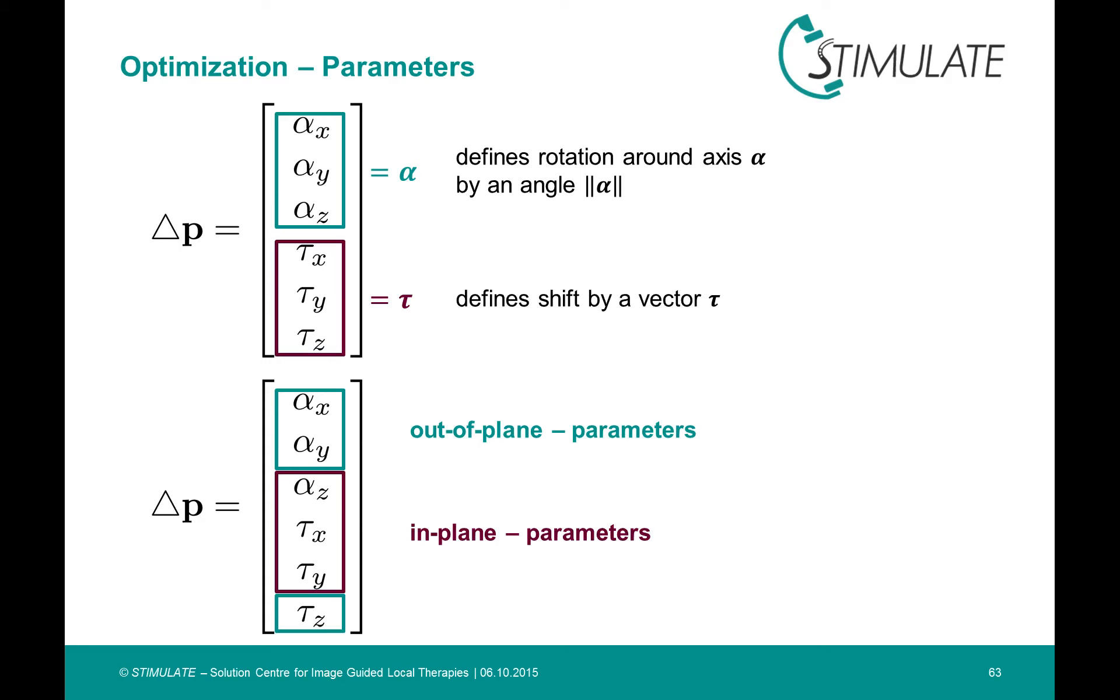Furthermore, it is reasonable to separate these geometric changes into two distinctive groups. We have so-called out-of-plane parameters, which are assigned to movements stepping out of the plane of rotation. And we have in-plane parameters, which are variations within the plane of rotation.